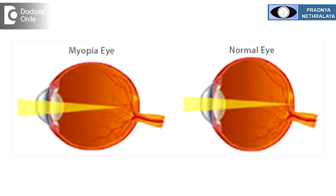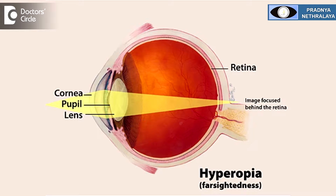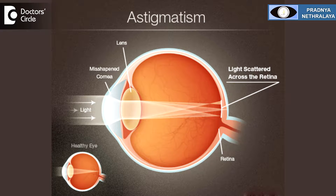Eyesight or refractive error in the eye are determined by the shape and the size of the eye. The shape and size of the eye are genetically predetermined. If a person has a larger eye — that is, the eye from the front to the back is larger in size — the person usually develops what is called a short sight or myopia. If a person has a smaller eye, then the person develops what is called a long sight or hypermetropia. Astigmatism is because of the curvature abnormalities.